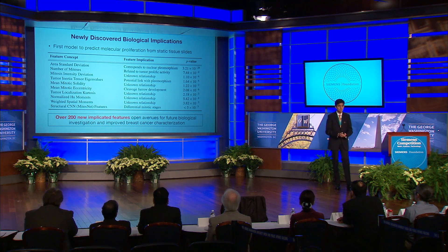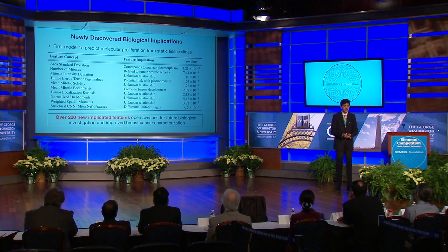Furthermore, my model's ability to extract molecular features from static tissue slides provides unprecedented insight into the biological underpinnings of tumors. In particular, I both confirmed existing features and identified over 200 novel biological features that may correspond to tumor proliferation and breast cancer. Confirmed features include the number of mitoses — currently the sole feature in use for tumor proliferation assessment — and the mean mitotic area standard deviation, a feature corresponding to mild dysplasia, hyperplasia, and nuclear pleomorphism. Novel features include structural mitosis attributes, spatial mitotic locations, and differential mitotic stages, all of which are new in the characterization of breast cancer.